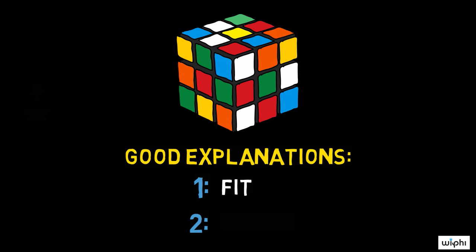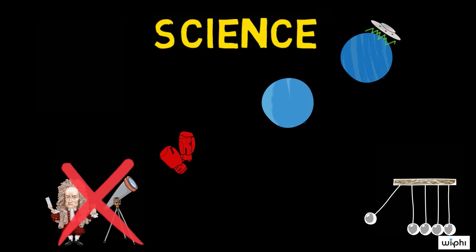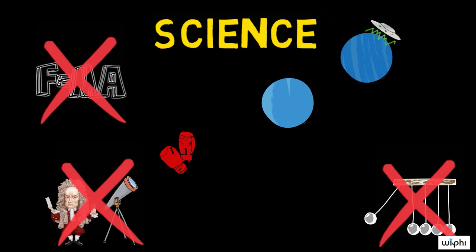Consider another possible explanation for the discrepancies between the observed orbit of Uranus and the predictions of Newton's theory. That Newton's theory was wrong. To accept that Newton's theory was wrong would require giving up on lots and lots of other very good explanations, and so wouldn't fit very well with what astronomers already knew. The idea that an unobserved planet was causing the discrepancies fit much better with what they already knew, and so counted as a better explanation.